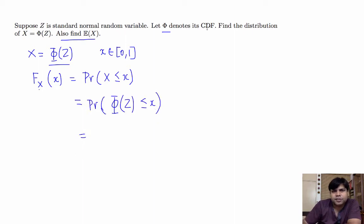Now since Phi is a strictly increasing function, we can write this event as probability that Z is less than or equal to Phi inverse of little x. So this is just a number and we are interested in finding the probability that Z is less than or equal to Phi inverse x, but this is nothing but the CDF of Z evaluated at Phi inverse x, and we already know that Phi is the CDF of Z.